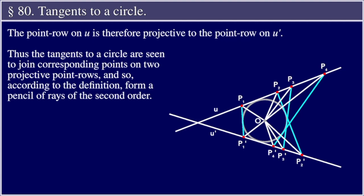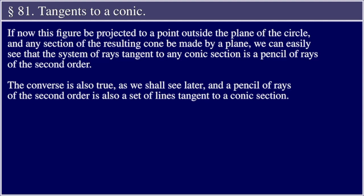The point row on u is therefore projective to the point row on u'. Thus the tangents to a circle are seen to join corresponding points on two projective point rows, and so, according to the definition, form a pencil of rays of the second order.